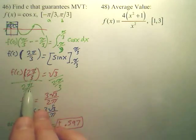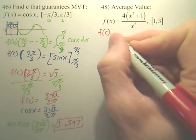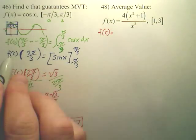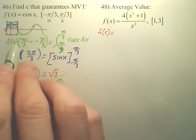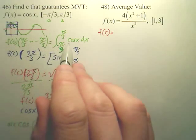Average value, very similar to this one, except average value is basically saying f of c equals, instead of going f of c times b minus a, it's just going to keep f of c on one side and divide the b minus a over.